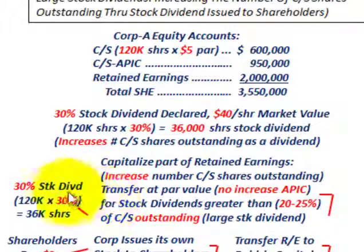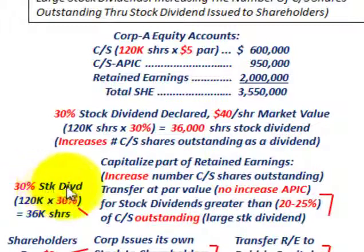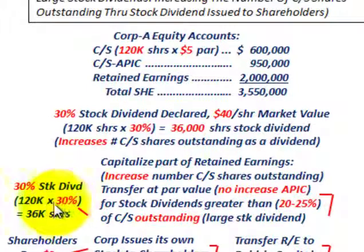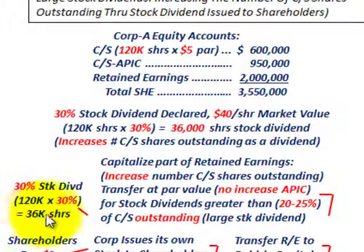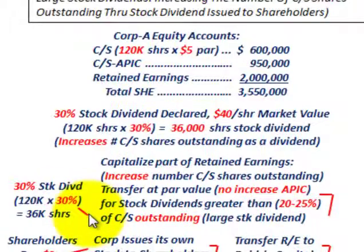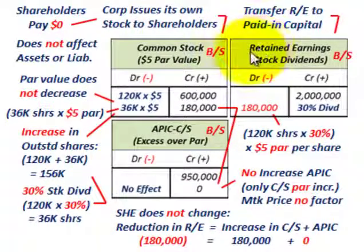The 30% dividend on 120,000 shares currently outstanding results in 36,000 additional shares to be issued to stockholders. That's the large stock dividend we have here. Let's go and look at how we'd account for that.